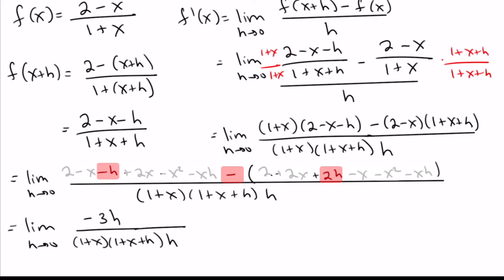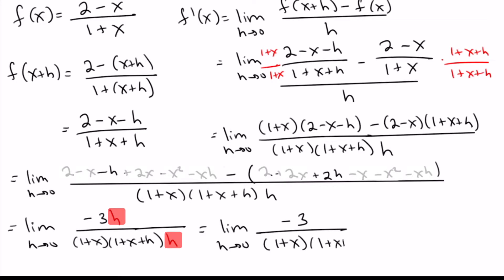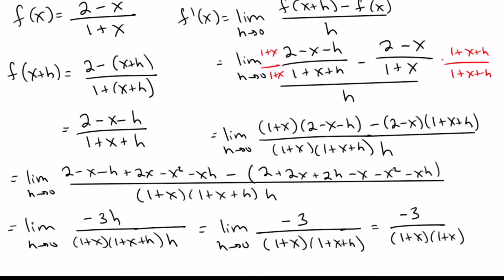At this point remember the goal is always to plug in h equals 0, but the problem is we've got that h on the bottom, which would make us divide by 0. Now we can see we can cancel out those h's. If we do that, we're left with negative 3 on top and (1 plus x)(1 plus x plus h) on the bottom. Plugging in 0 gives us (1 plus x)(1 plus x), so the derivative equals negative 3 over (1 plus x) squared. There is our derivative.